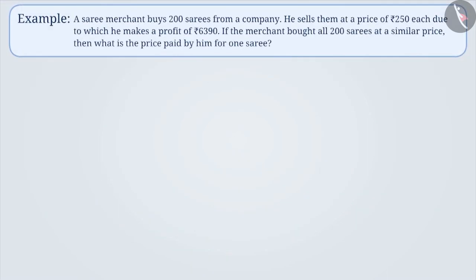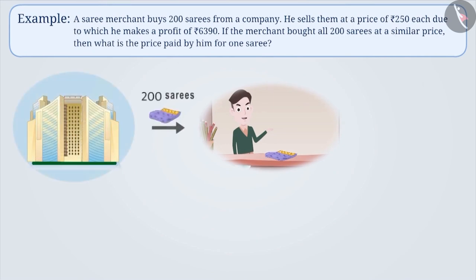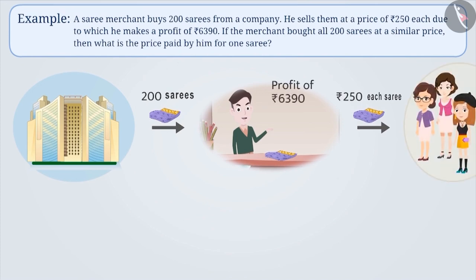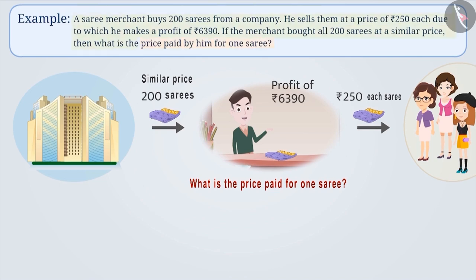Next example. A saree merchant buys 200 sarees from a company. He sells them at a price of Rs. 250 each, due to which he makes a profit of Rs. 6,390. If the merchant bought all 200 sarees at a similar price, then what is the price paid by him for one saree? Though the example seems difficult, it is actually very simple. Let's see what information is given and what we need to find out.